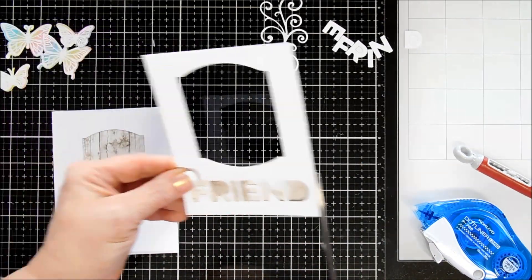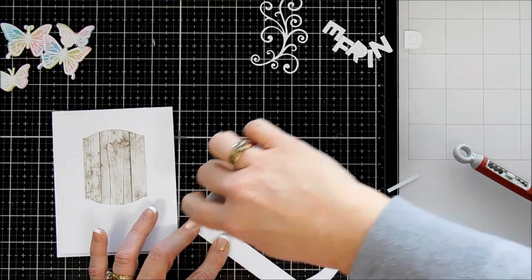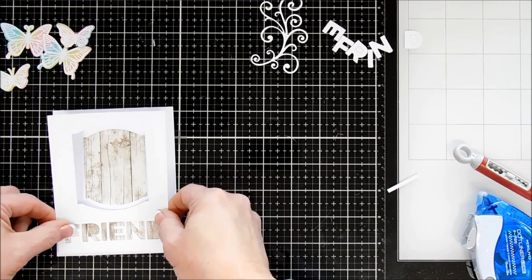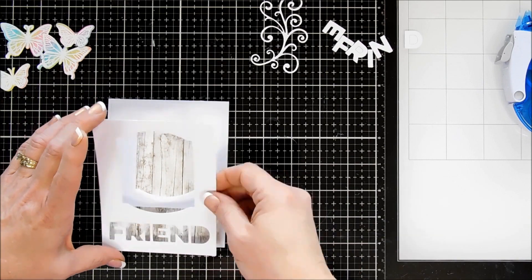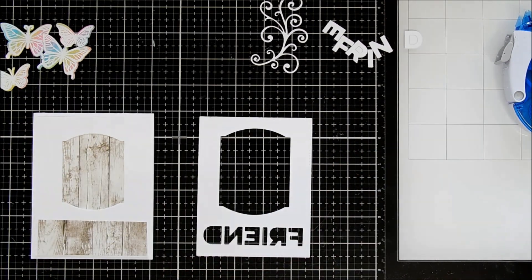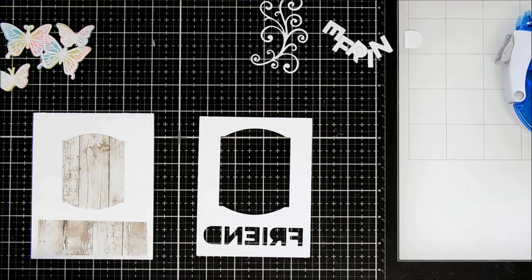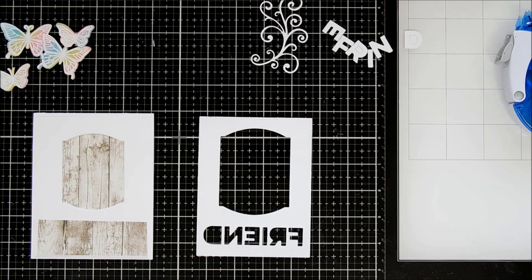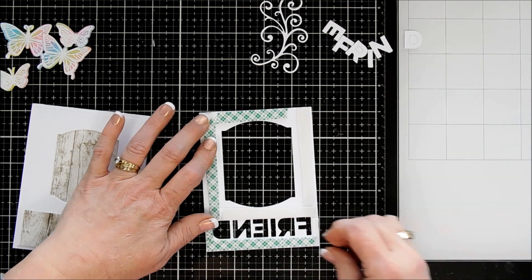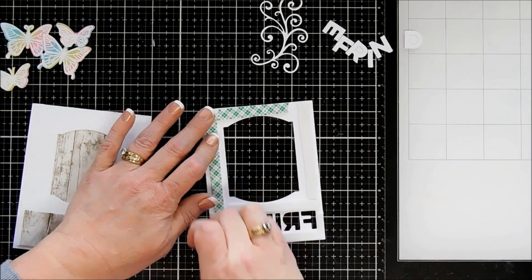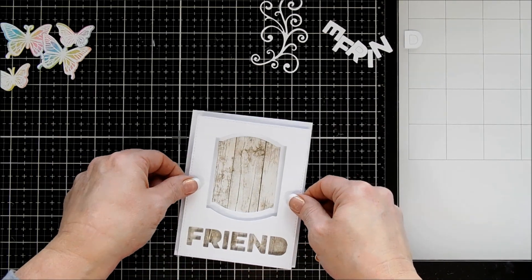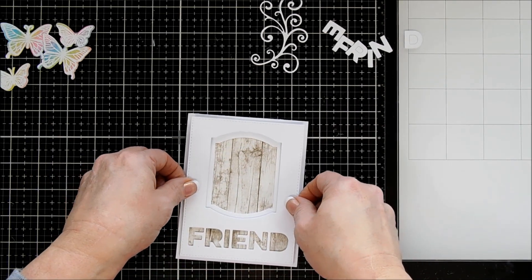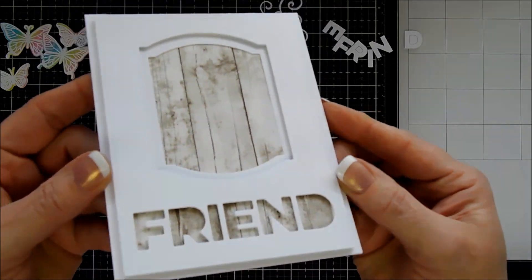And then we're going to go ahead and adhere the wood grain behind our friend. The wood grain is going to go directly behind our first panel we adhered down. Now our top panel, I wanted to add some dimension by using some double-sided foam tape. I'm just going to adhere some behind this entire panel. And then we're going to go ahead and adhere this in the center of our card base. So everything is just lined up beautifully and we get that nice wood grain in the background. Very earthy. I like that.